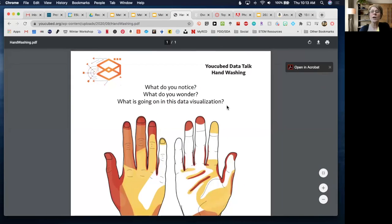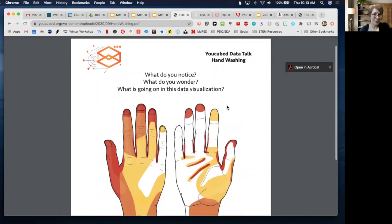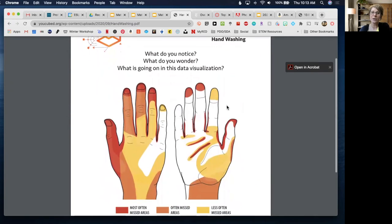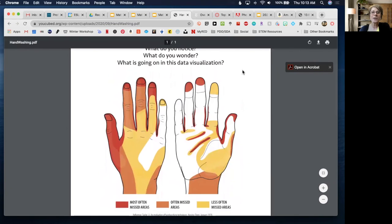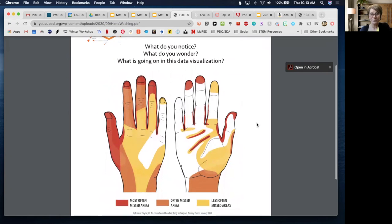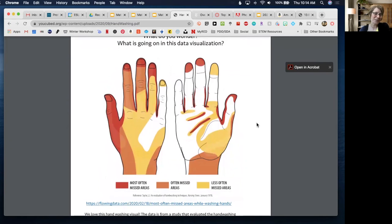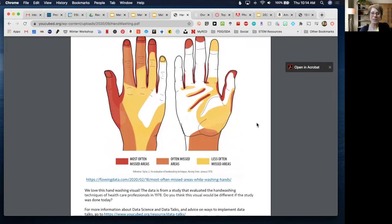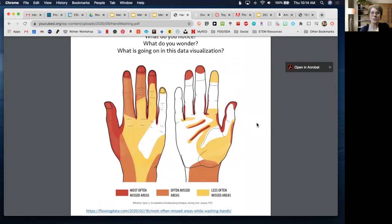So here is one from Ucubed that I would consider something that you could use kindergarten, clear up through high school if you wished. And pretty much they all start with the questions of what do you notice and what do you wonder. And this is a great way for kids just to start asking questions about the data that they're seeing. And so this one obviously has to do with the washing of hands. So I thought that was a pretty relevant one.